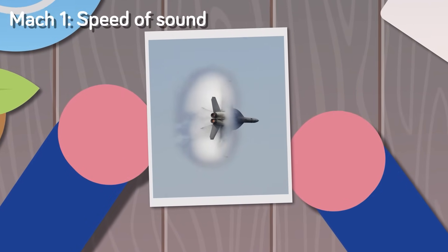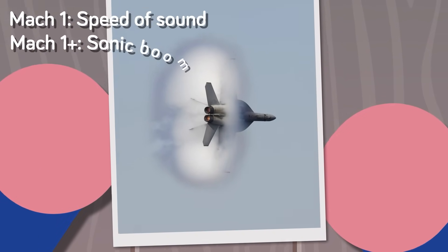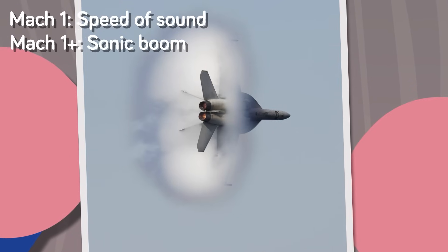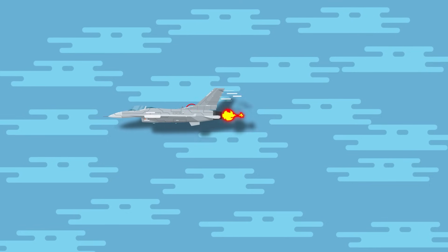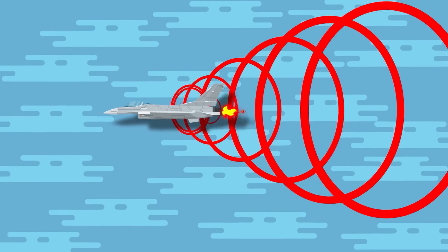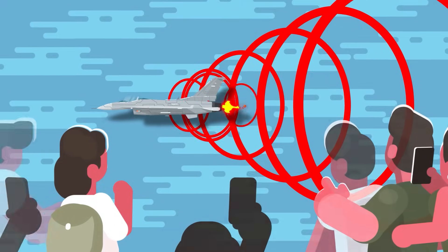Mach 1 means that an object is traveling at the speed of sound. Anything over Mach 1 means an object is going faster than the speed of sound and will create a sonic boom. The loudness and intensity of the phenomenon is determined by several factors, but what is a sonic boom and what actually causes it?